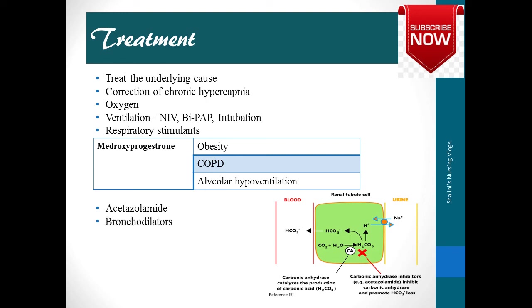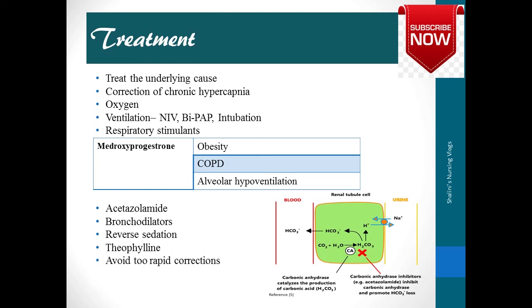Additional treatments include bronchodilators to improve airway passage, reversing sedation in deeply sedated patients where there is depression of the respiratory center, and theophylline to relax and improve the airways. It is also important to avoid too rapid correction so the patient does not shift from acidosis to alkalosis.